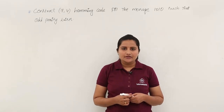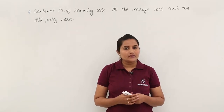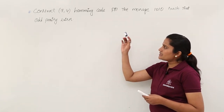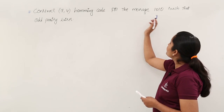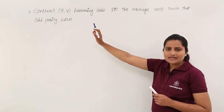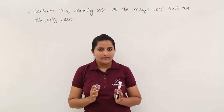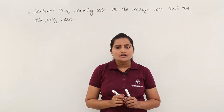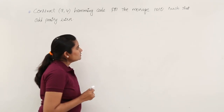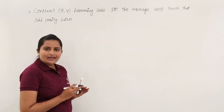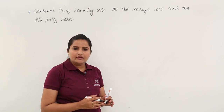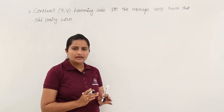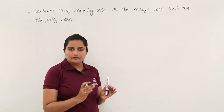In this class I am going to explain how to generate Hamming code with odd parity. The example problem is: construct a 7,4 Hamming code for the message 1010 such that odd parity exists. For generating any Hamming code, either odd parity or even parity, first you need to determine how many parity bits need to be added to the message.